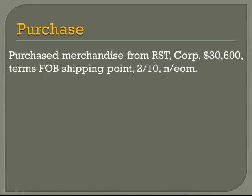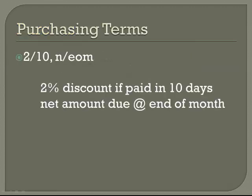Let's say we have a company that decides to buy some inventory under the terms FOB Shipping Point, 2/10, and EOM. Let's quickly review those terms. 2/10 stands for a 2% discount if paid within 10 days, and EOM means the net amount is due at the end of the month. If EOM had instead been N30, it would mean the net amount is due in 30 days rather than at the end of the month.